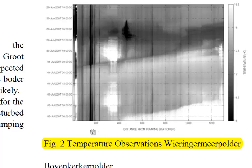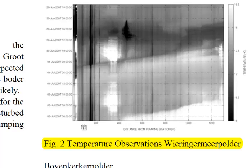Despite the subtle temperature differences, they are enough to find seepage, and indeed you find it exactly where one would expect the most seepage zones — namely close to the pumping station, which is closest to the lake. You see a continuous black stripe there, which corresponds to the seepage locations. You also see other patterns, like warming of the water over the day, and a set of warm days where the whole ditch slowly warms up, with a spatial pattern starting upstream and moving downstream.